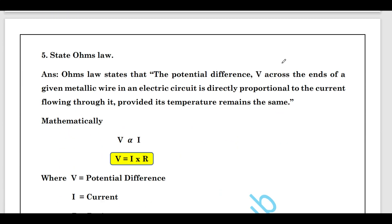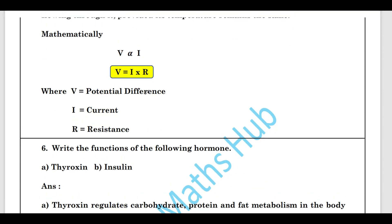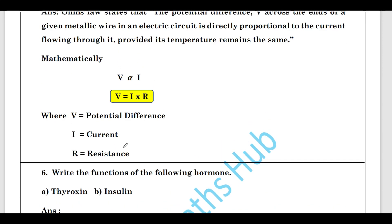State Ohm's law. Ohm's law states that the potential difference V across the ends of a given metallic wire in an electric circuit is directly proportional to the current I flowing through it, provided its temperature remains the same. Mathematically, V = IR, where R is resistance, V is potential difference, and I is current.